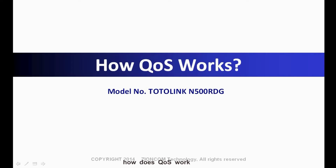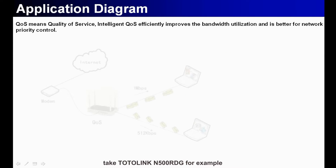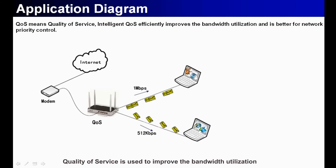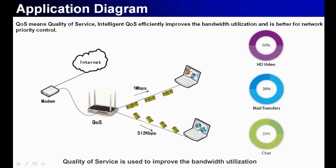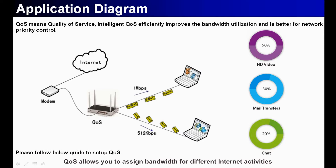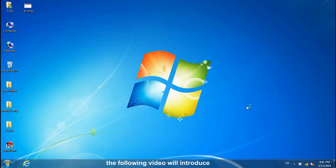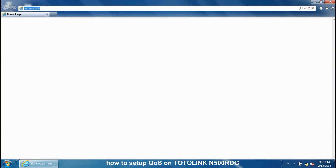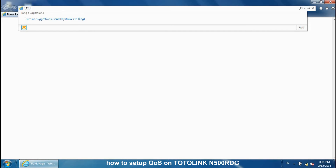How does QoS work? Take TotalLink M500RDG for example. Quality of Service is used to improve bandwidth utilization for better network priority control. Looking at an application diagram, QoS allows you to assign bandwidth for different internet activities. The following video will introduce how to use QoS on TotalLink M500RDG.